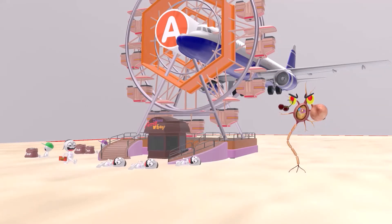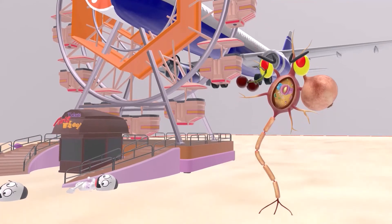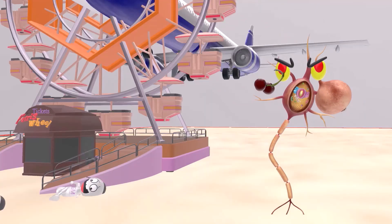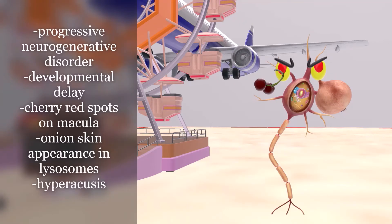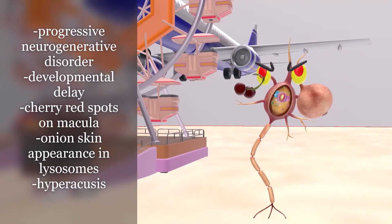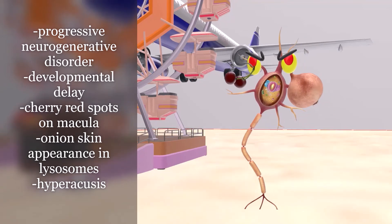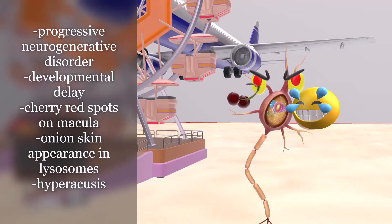This accumulation of GM2 ganglioside leads to the symptoms seen in a patient with Tay-Sachs disease. The terrorist behind the crash is an evil nerve cell, helping us remember that Tay-Sachs is a progressive neurodegenerative disorder. This nerve terrorist being developmentally delayed reminds us of developmental delay. He has cherries hanging from his eye, representing the cherry red spot on the macula. An onion coming out the other side reminds us of lysosomes with the onion skin appearance when GM2 accumulates in the lysosomes. A hyper-cute guy popping out of his ear helps us remember hyperacusis, another symptom of Tay-Sachs disease.